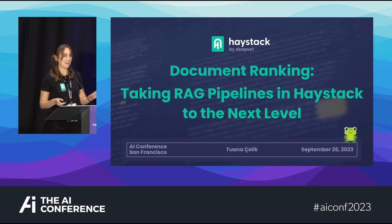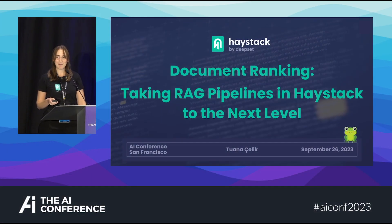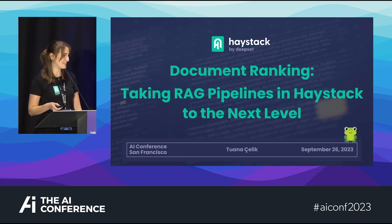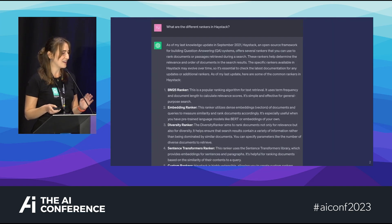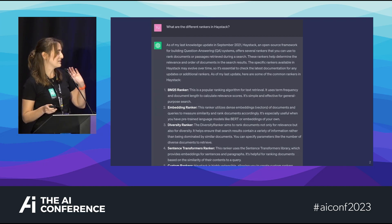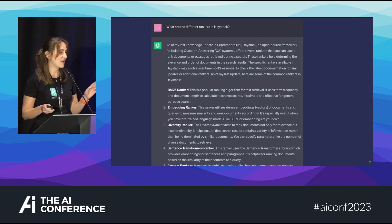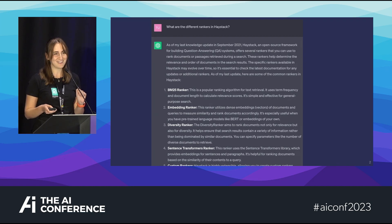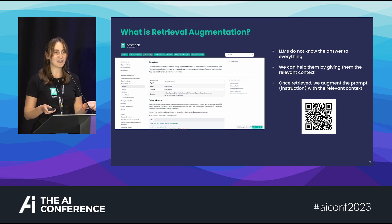Hello everyone, I'm going to be talking about document ranking specifically for retrieval augmented generative pipelines. To start, for those not familiar with RAG pipelines, here's a quick intro. I've asked GPT what are the different rankers in Haystack and got a pretty long-winded response with a list of rankers — but unfortunately these are not correct rankers. We do not have these rankers in Haystack; only one of them is correct. We have a documentation page about rankers — you can scan that QR code to go to it.